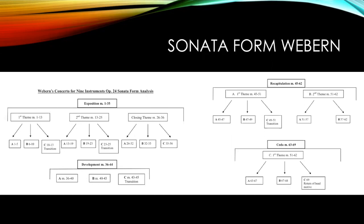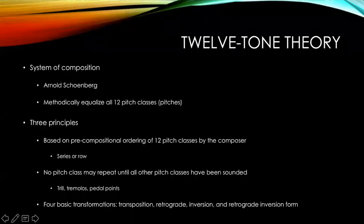This piece is in the classical sonata form. It has an exposition with a first theme, a second theme, and a closing theme, followed by a development, a recapitulation, and even a coda. Most musicians should find some comfort in Webern's use of the classical sonata form, as this musical formula has been around for hundreds of years and was used by many of the greats, like Mozart. While Webern does utilize the classical sonata form, his work sounds quite a bit different than Mozart and his peers, due to his utilization of 12-tone theory.